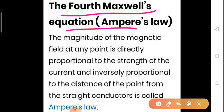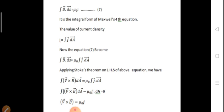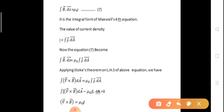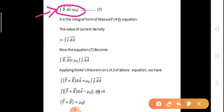Coming to the last equation — Maxwell's fourth equation — we derive it using Ampere's law. The magnitude of the magnetic field at any point is directly proportional to the strength of the current and inversely proportional to the distance from the straight conductor. This is the statement of Ampere's law.